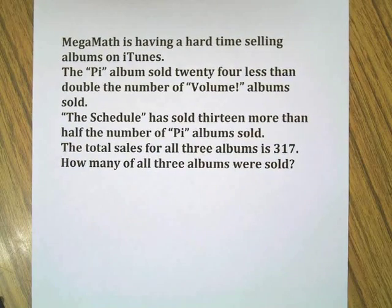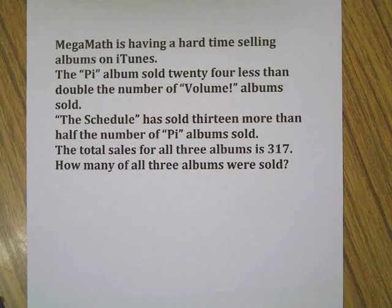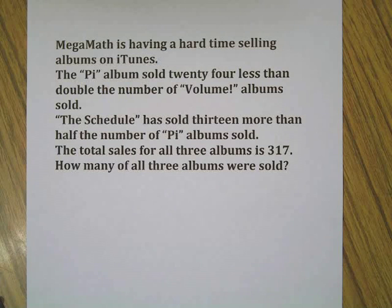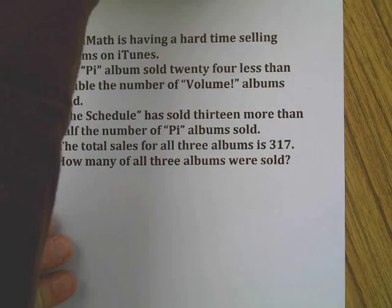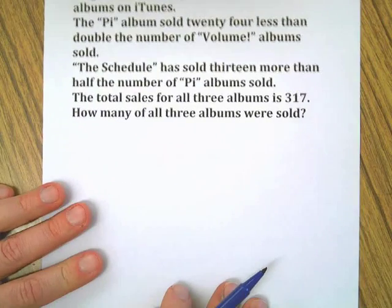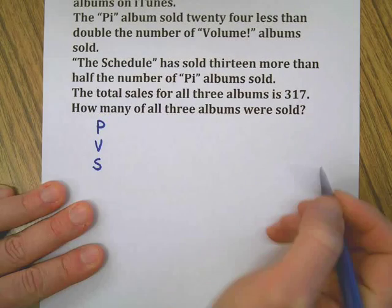Check that out—Mega Math, my band. My poor band, I write math songs, people don't like to download math songs. The Pi album sold 24 less than double the number of Volume albums. The Schedule has sold 13 more than half the number of Pi albums. Total sales 317. How many of all three were sold? Pause the video, work it out, and then when you come back we can compare.